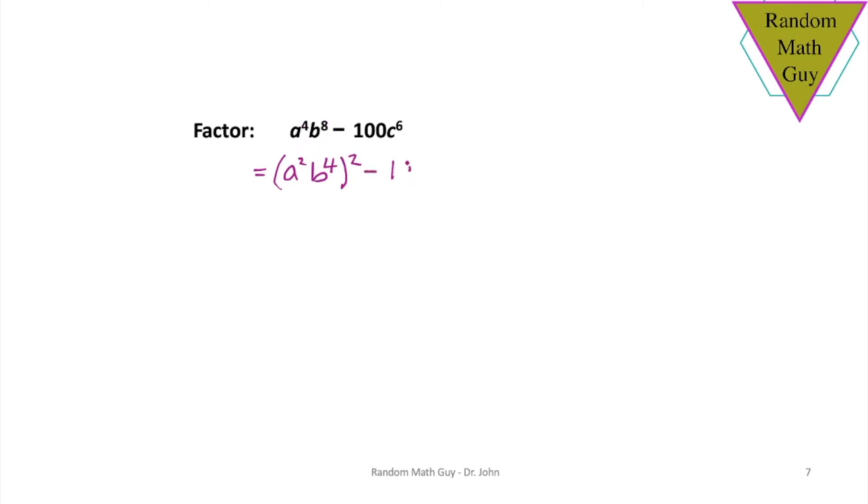Over here, the 100 is actually just 10 all squared, and 6 divided by 2 is 3. So there you go, a template for difference of squares.